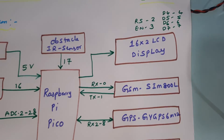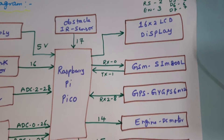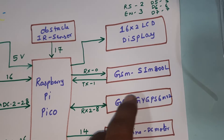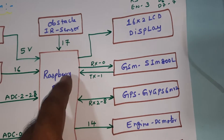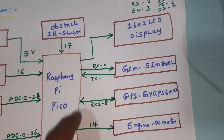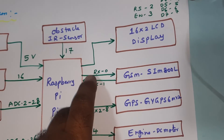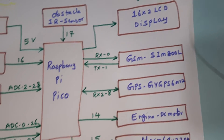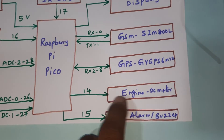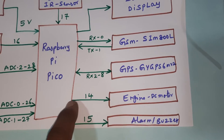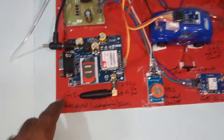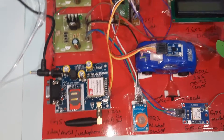The GSM SIM900A module uses serial communication on UART1 and UART2 and is connected to the GPS module. The engine is connected to pin 14 and the alarm is connected to pin 15. An adapter power source is also provided to the GSM module.